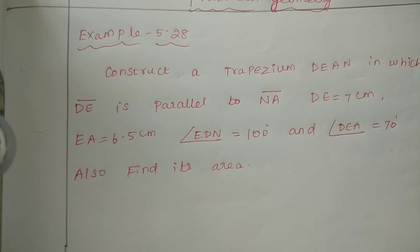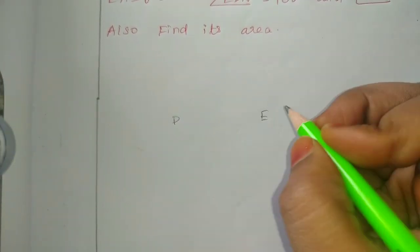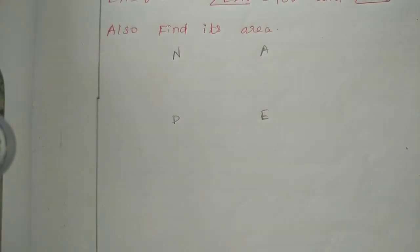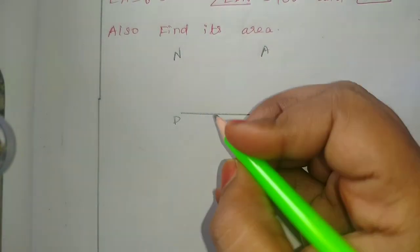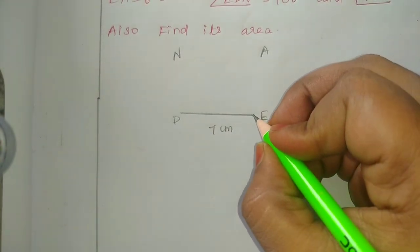From the given information on the geometry, we draw a rough diagram. So the rough diagram — we label D, E, A, N. First, DE is 7cm, so the rough line is 7cm.